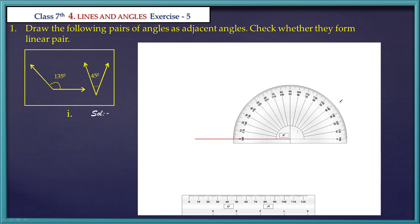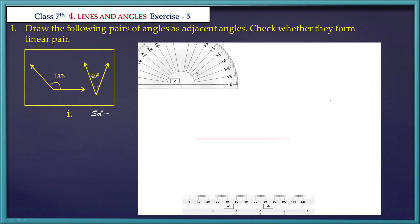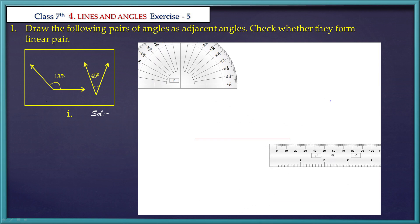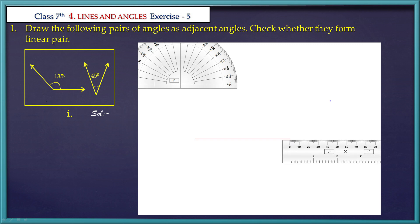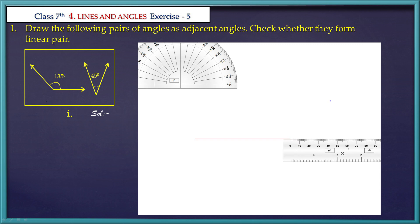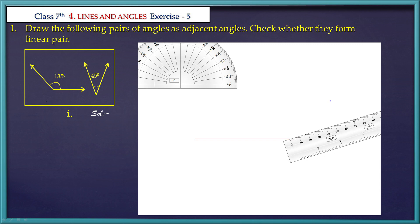135 degrees — now we mark the point. Mark the point. Now take the scale. With the help of the scale, join the right end of the line segment and the marked point. From drawing the line segment to the right end, mark the point and join with the scale.